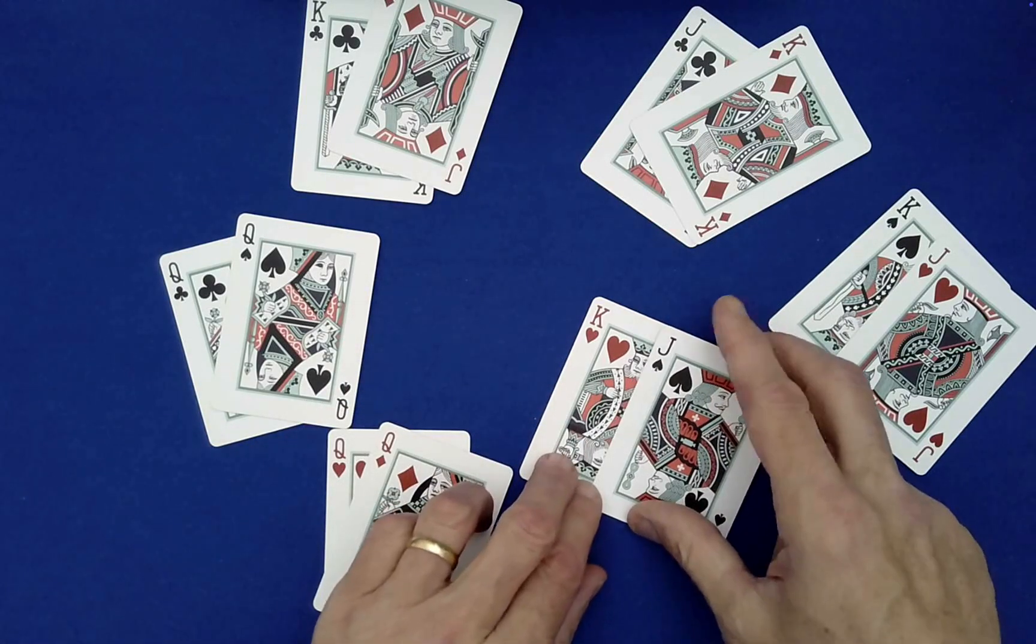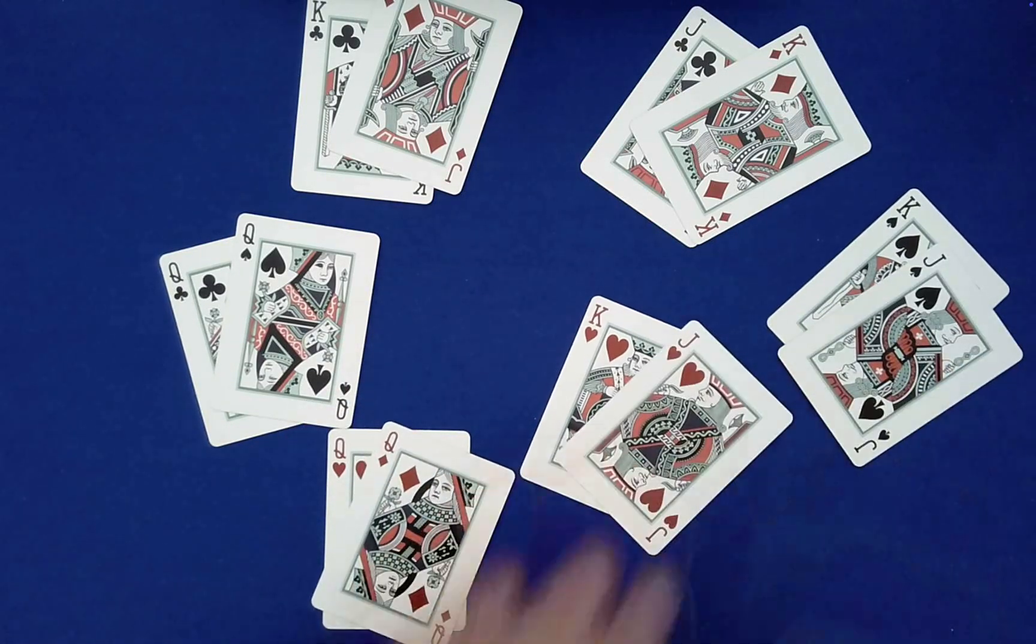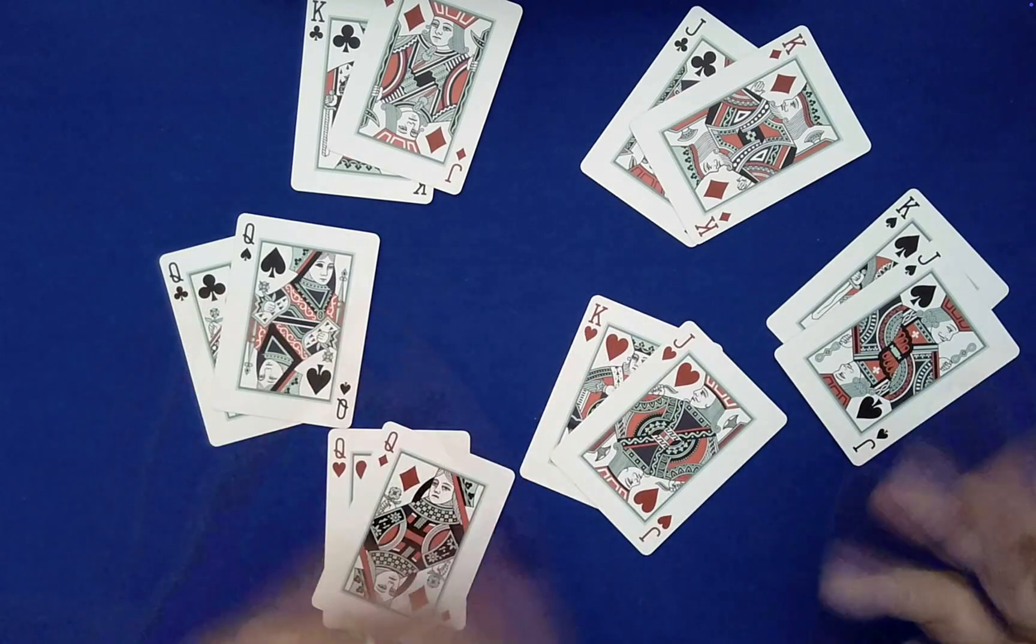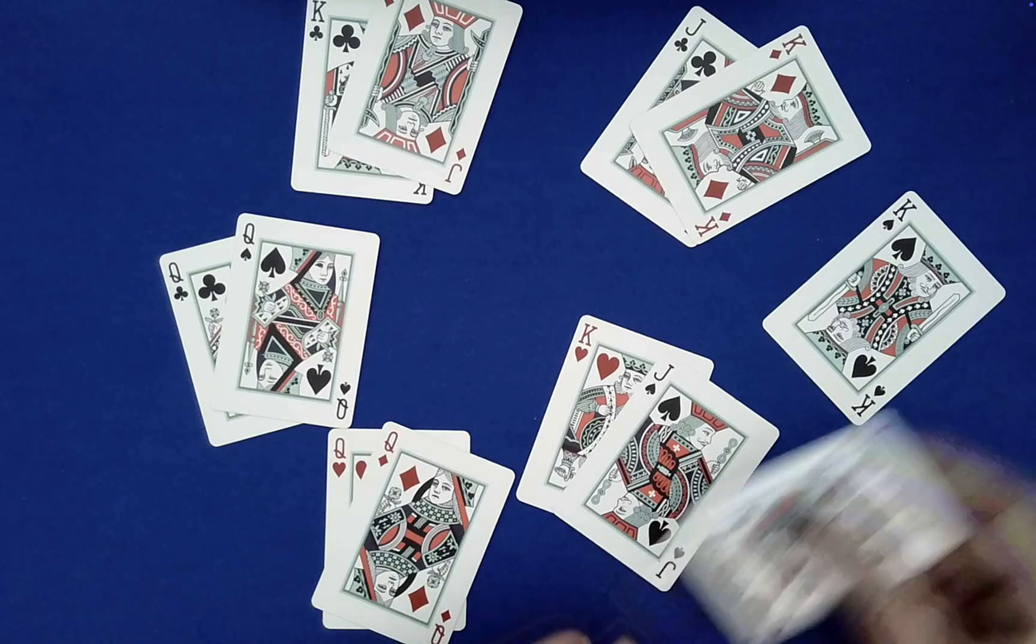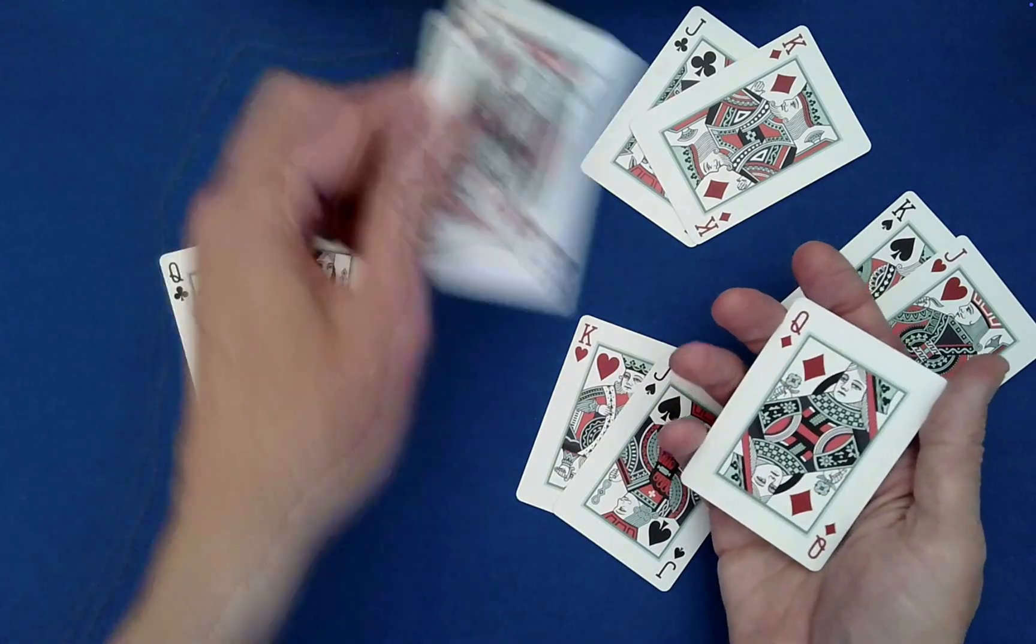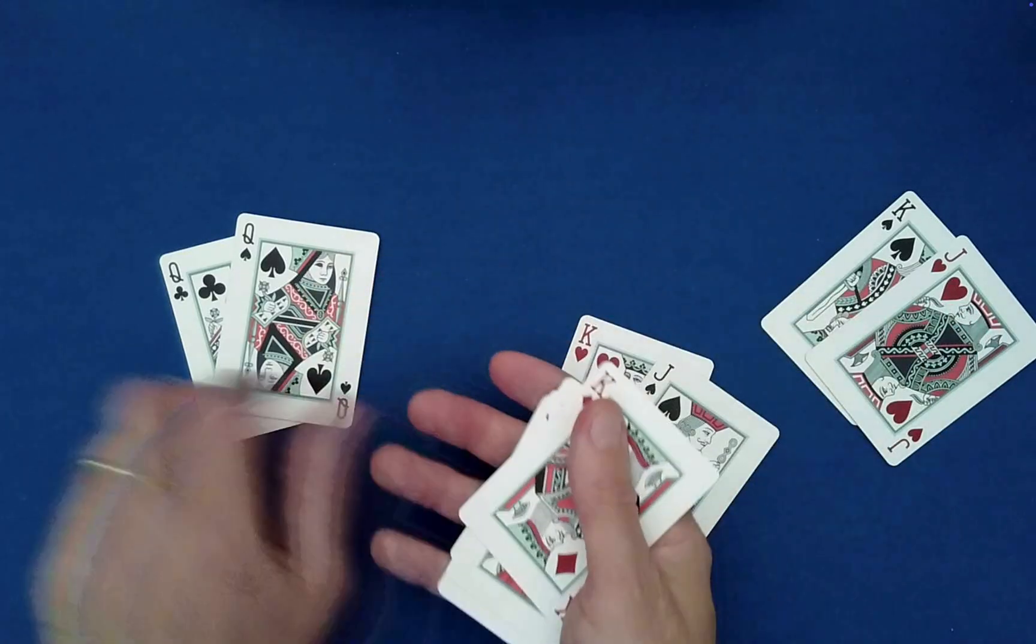I mean, you can have them matching color I suppose if you wanted to. You could have the kings and jacks like that, but those aren't companion cards technically. They have to be the same card value and color. And then all you have to do is just randomly pick these up.